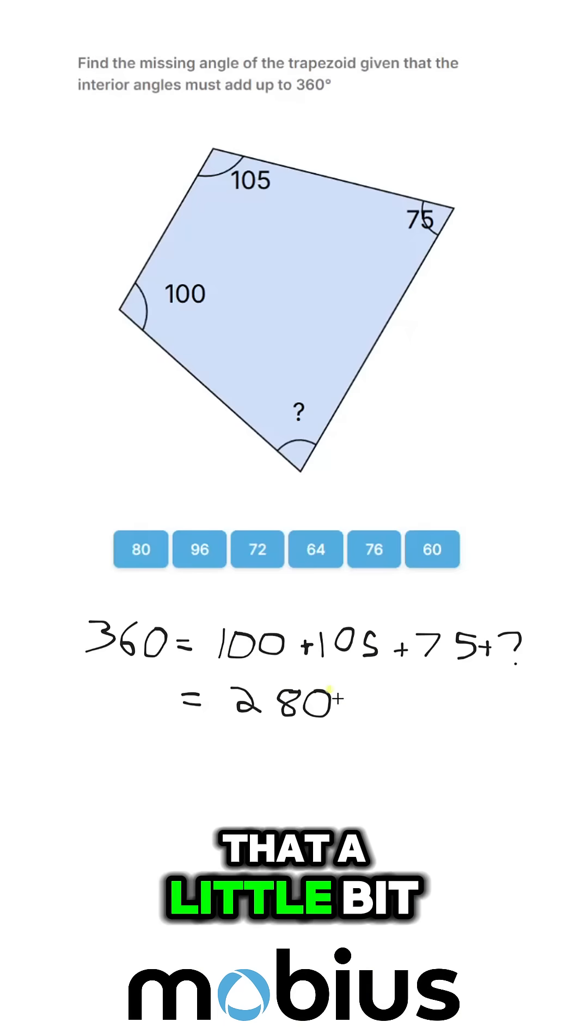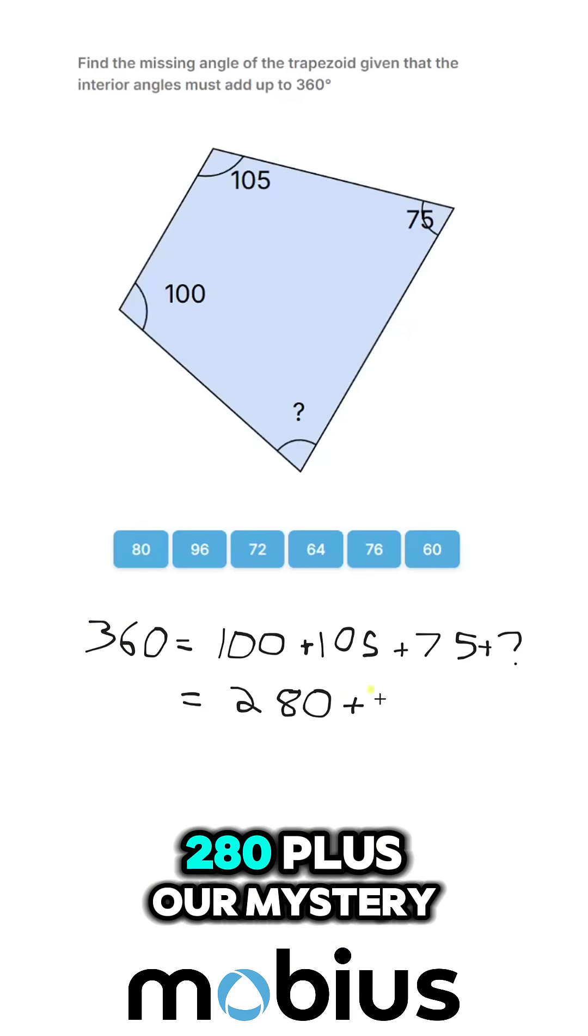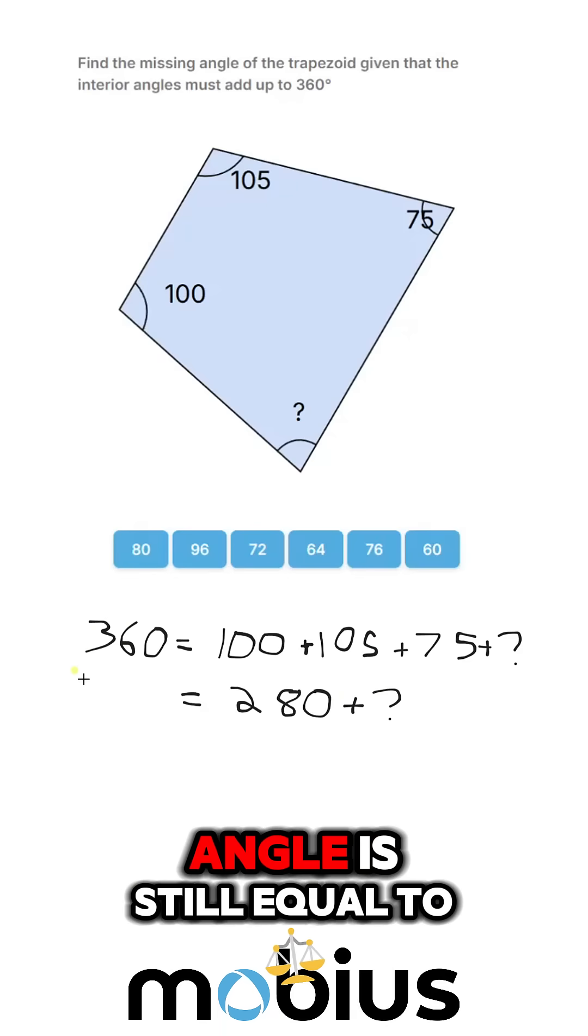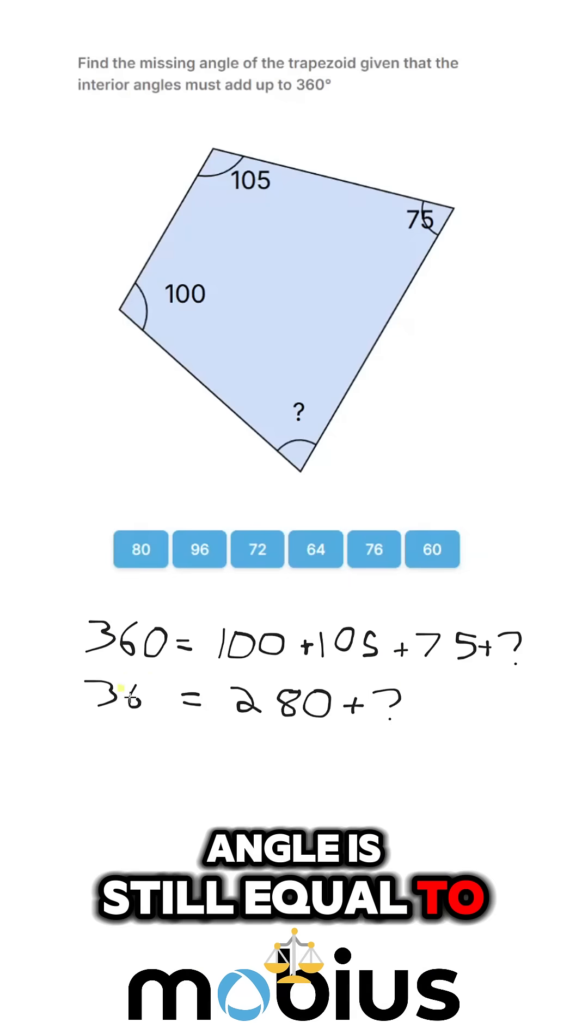So, just to simplify that a little bit, 280 plus our mystery angle is still equal to 360.